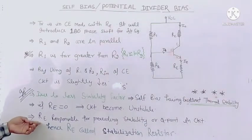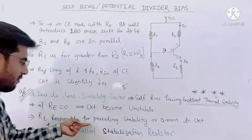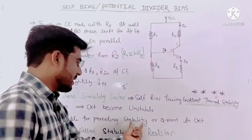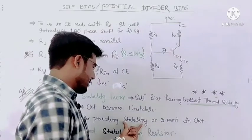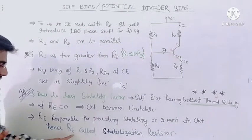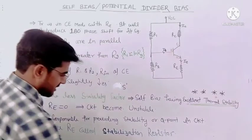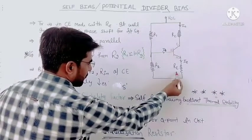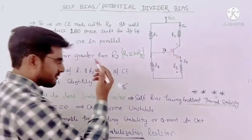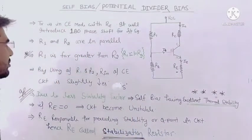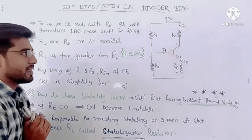The last point: the emitter resistor RE is responsible for providing stability. Due to this stability, our Q point becomes stable. If stability is high, the Q point gets fixed; if the Q point is fixed, the circuit is more stable. Hence RE is called the stabilization resistor.